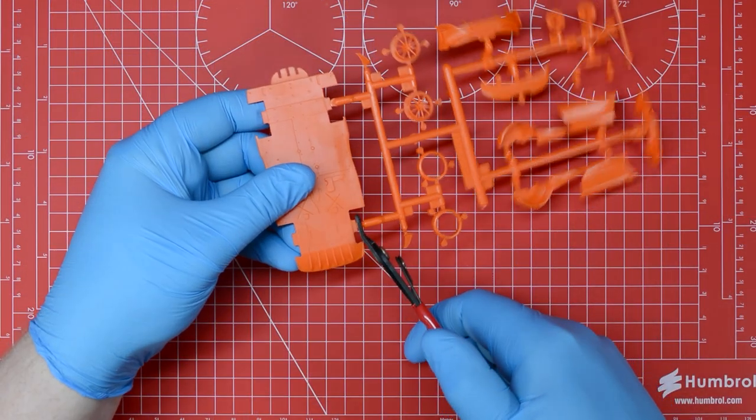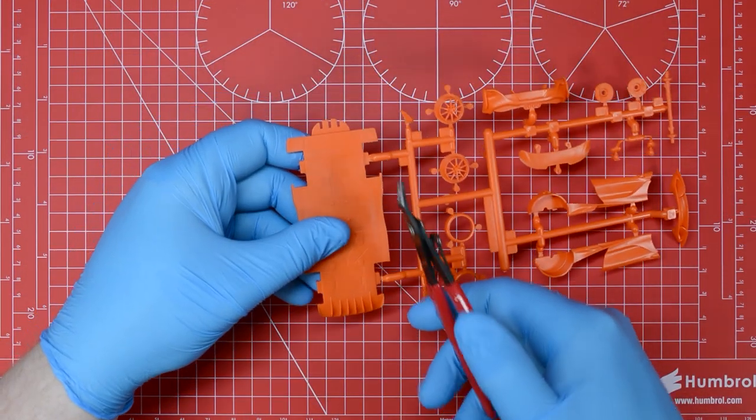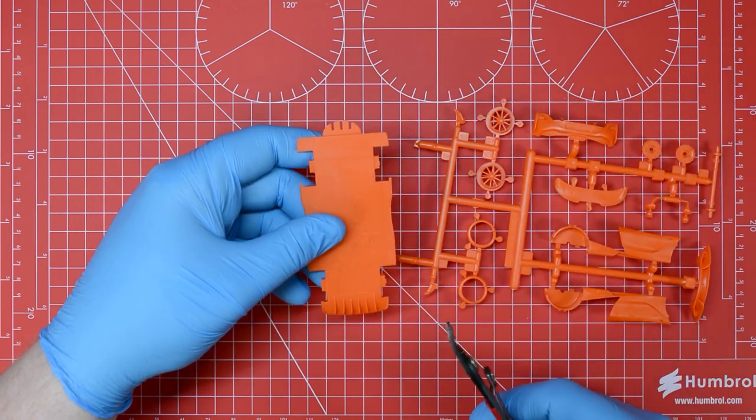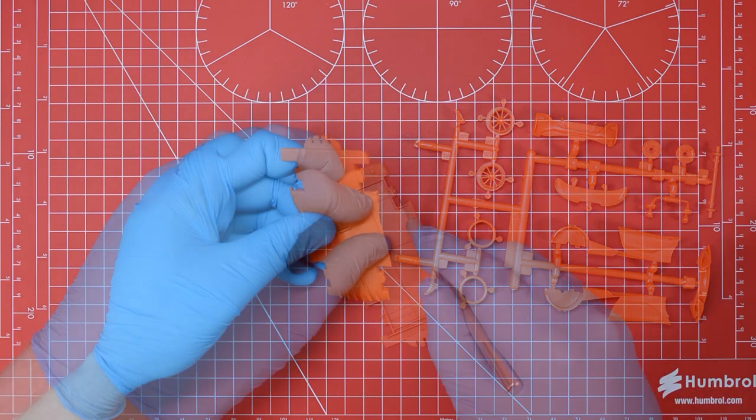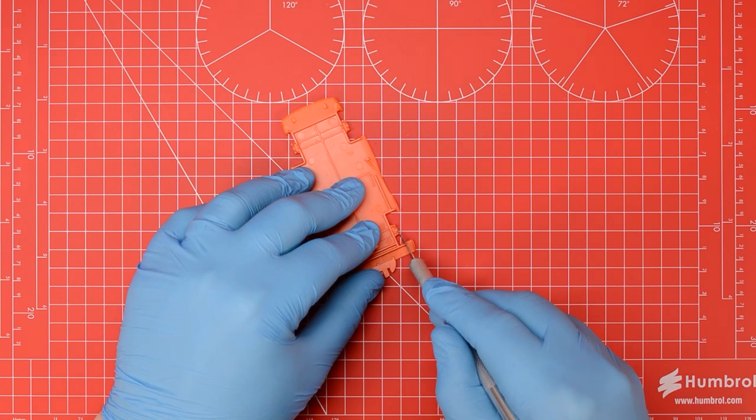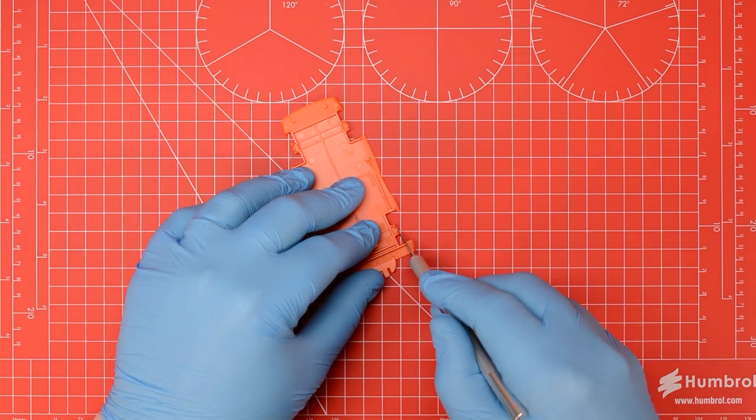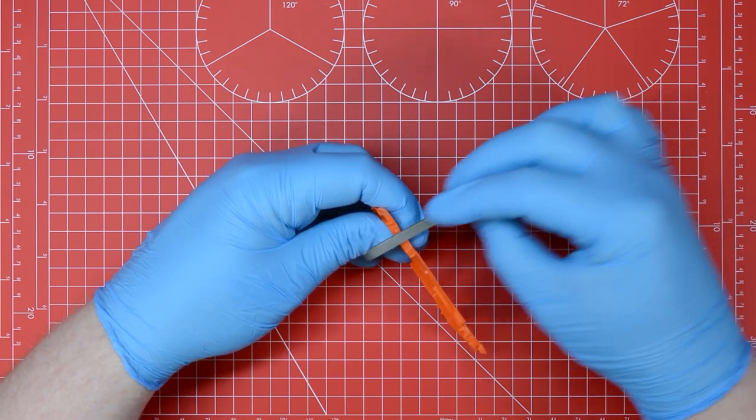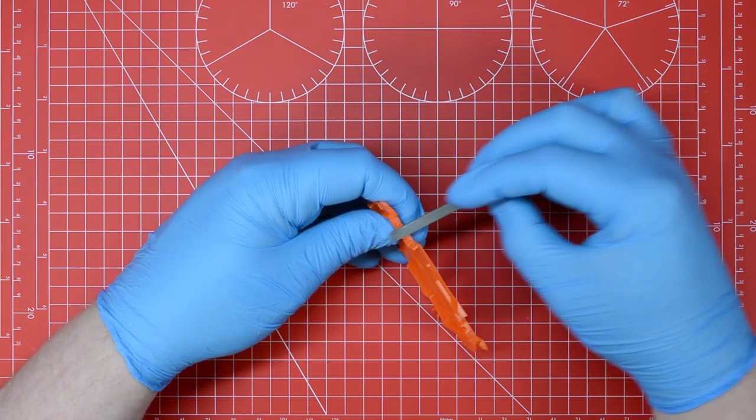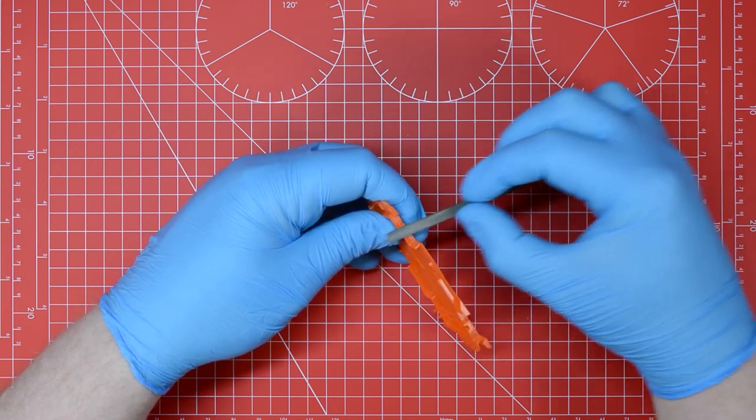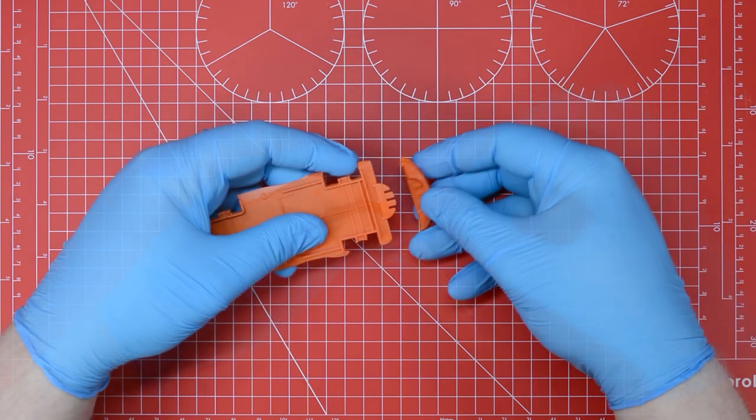We can now start the build by removing our first part from the frame with the cutters, cutting slightly away from the detailed surface to avoid damage. Any plastic that's left behind can be trimmed away using the modelling knife before we switch to the file to sand away any remaining evidence of that frame connection point. This leaves us with a nice flush surface.